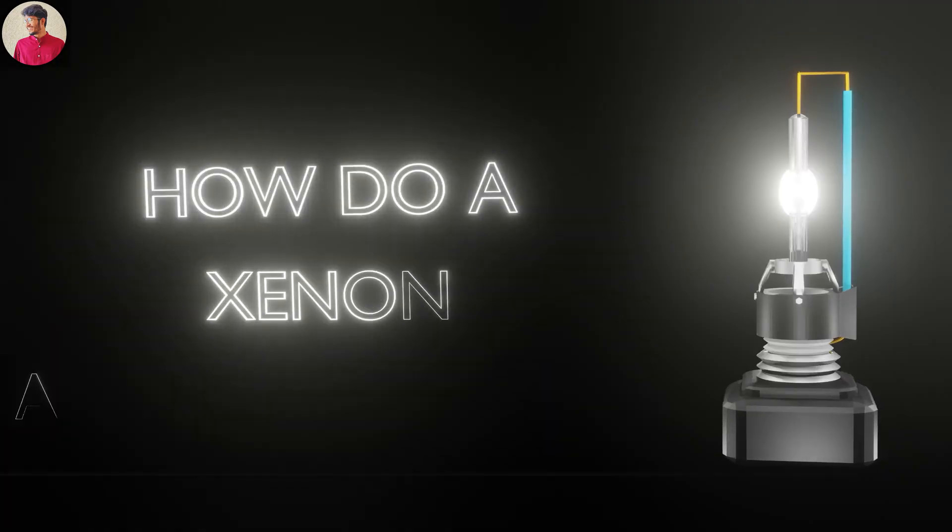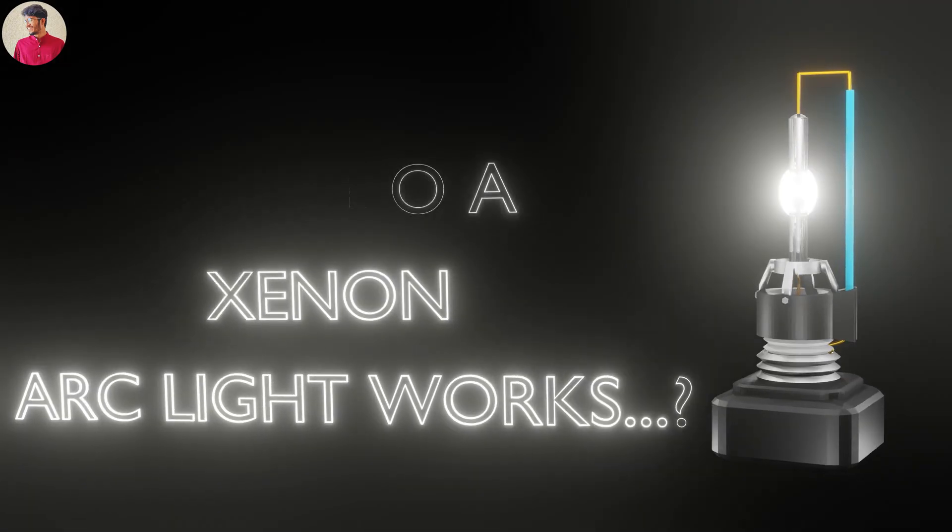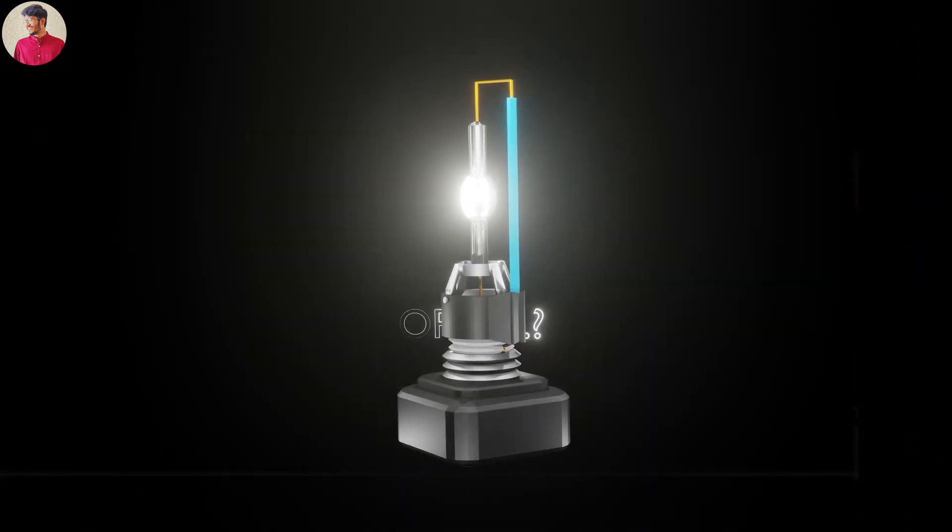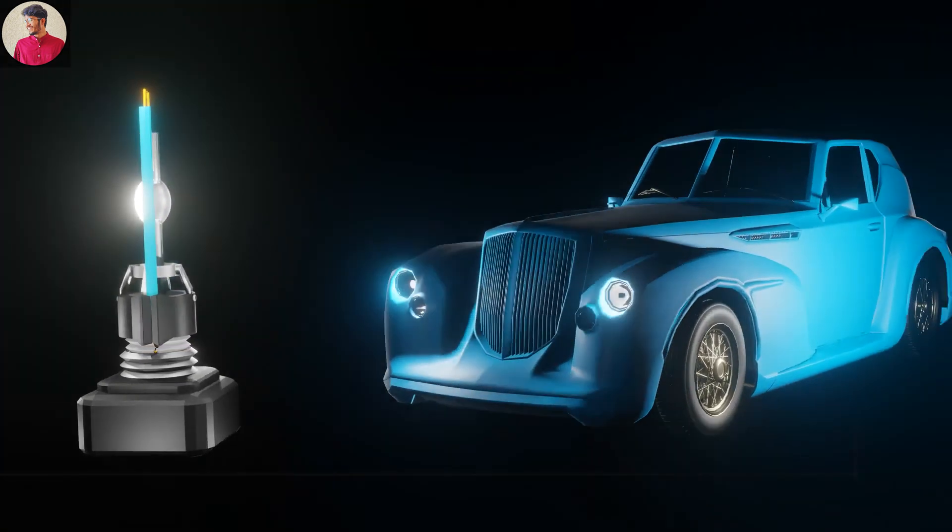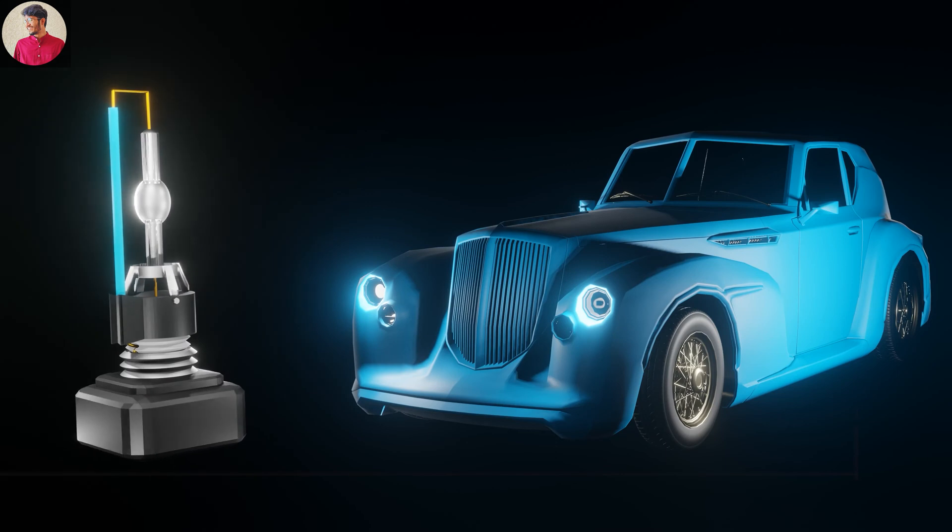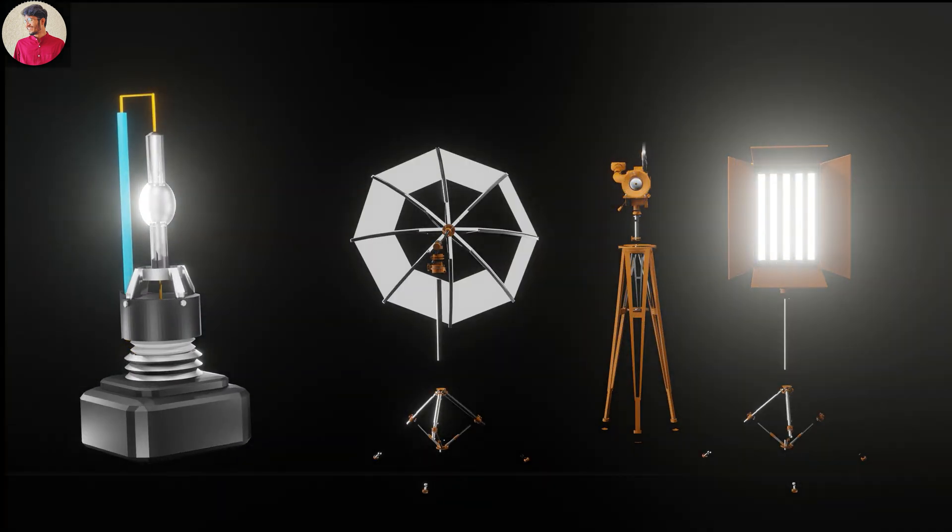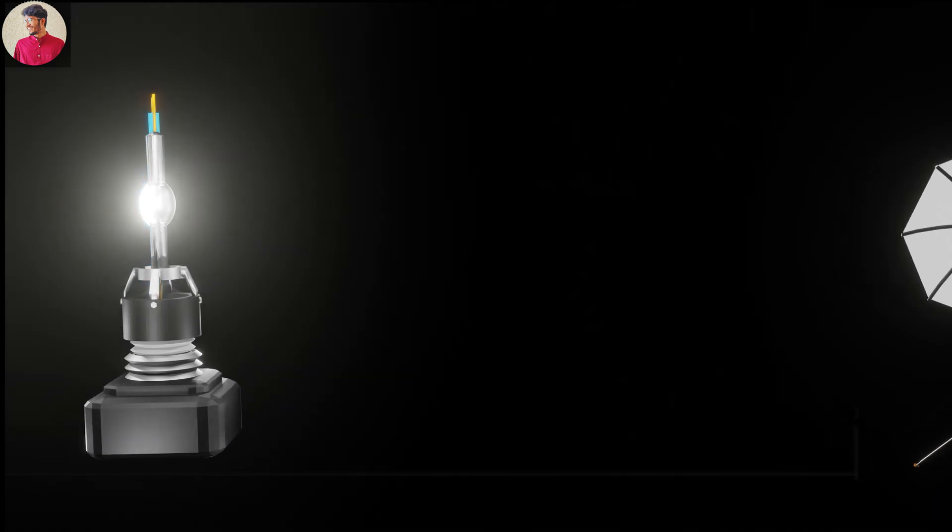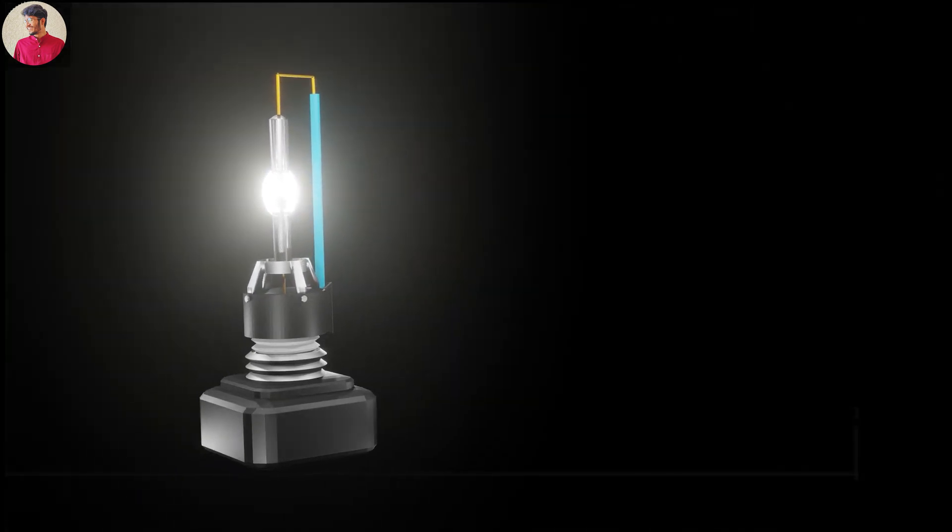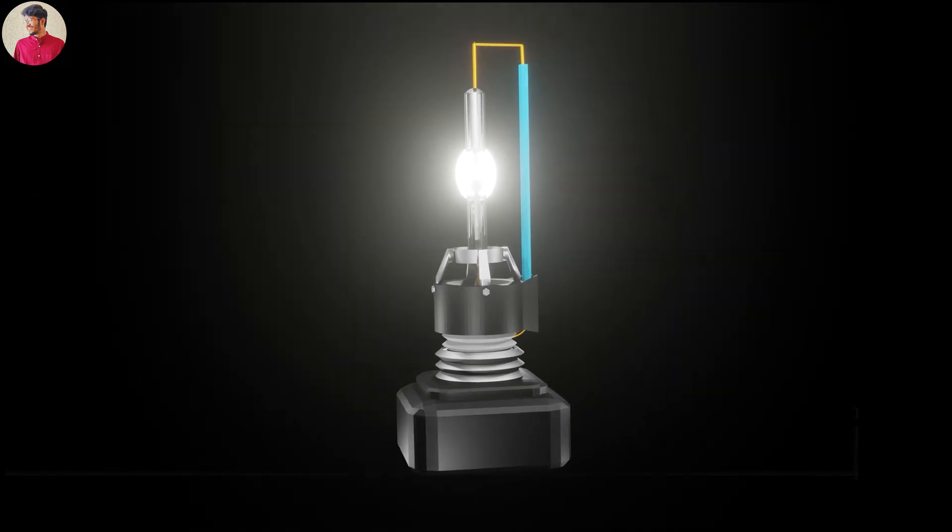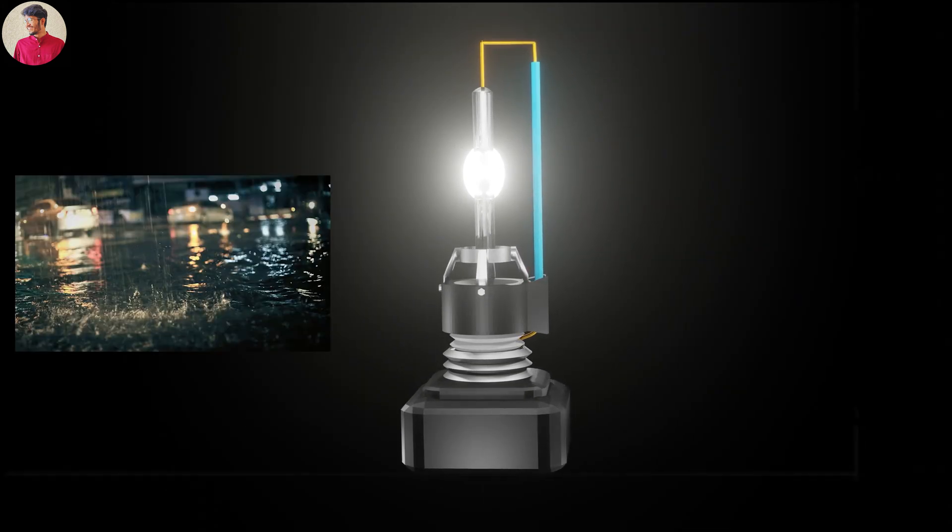How do xenon lights work? Xenon lamps produce bright white light that's most commonly used in car headlights. You may also find xenon lamps in flash photography applications as well as a variety of indoor and outdoor specialty applications such as flood or security lighting.